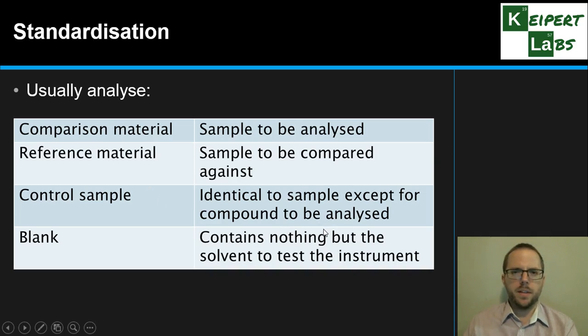And then the other thing that we do is a blank, which is nothing but the solvents - maybe it's water or ethanol or ethyl acetate or something else that we use to test the instrument. So that doesn't contain all the other complicated stuff. It's just a solvent. Just to make sure that that one should be completely blank. There should be nothing produced. And if the instrument is producing something, then that tells us something's up. So it's kind of like a double checking mechanism.